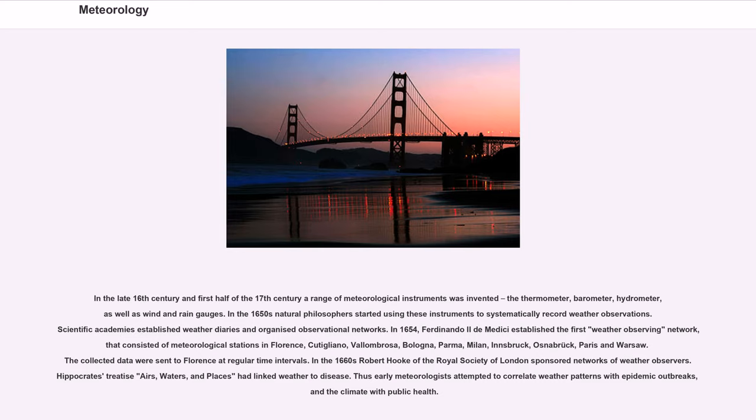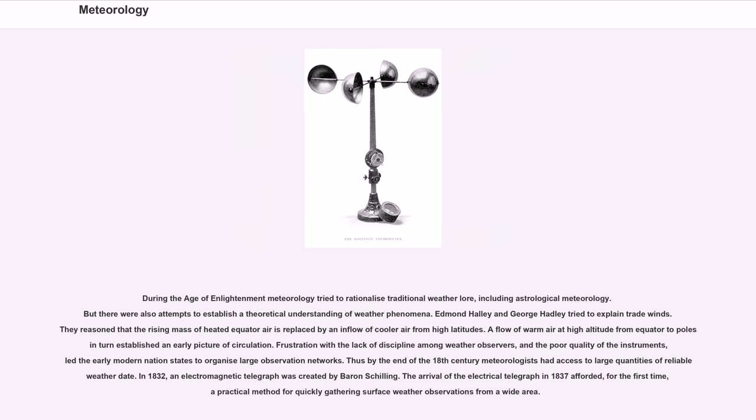In the 1660s Robert Hooke of the Royal Society of London sponsored networks of weather observers. Hippocrates' treatise Airs, Waters, and Places had linked weather to disease. Thus early meteorologists attempted to correlate weather patterns with epidemic outbreaks, and the climate with public health. During the Age of Enlightenment meteorology tried to rationalize traditional weather lore. Edmund Halley and George Hadley tried to explain trade winds. Frustration with the lack of discipline among weather observers led the early modern nation states to organize large observation networks. Thus by the end of the 18th century meteorologists had access to large quantities of reliable weather data.